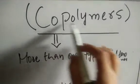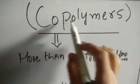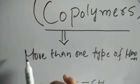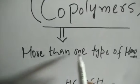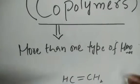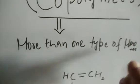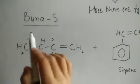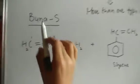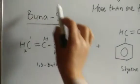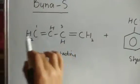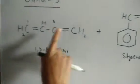Today our topic will be copolymers. A copolymer is basically when we have more than one type of monomer present in a polymer. The polymeric material which contains more than one type of monomer — it can be two, it can be three. For example, here I have drawn a polymer called butadiene-styrene polymer, which is made up of butadiene and styrene.